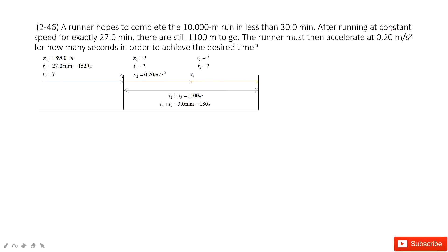It tells us after running at a constant speed for 27 minutes, so in part 1 the runner moves at a constant velocity. We say it is v1. We don't know yet, so we put it there. And the time taken for part 1 is 27 minutes.